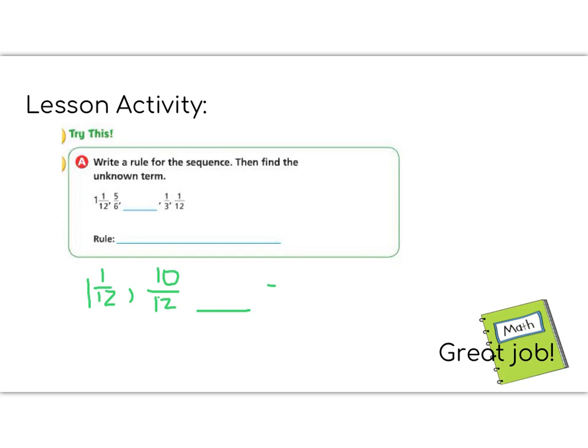Then we have a blank. Then our next one is 1/3. In order to make 3 into 12, we need to multiply by 4. So 1 times 4, because there's a 1 on the top, is 4/12. And lastly, I have 1/12.